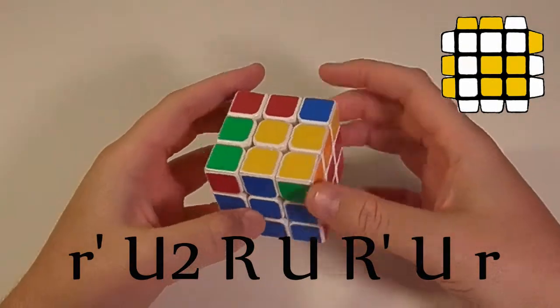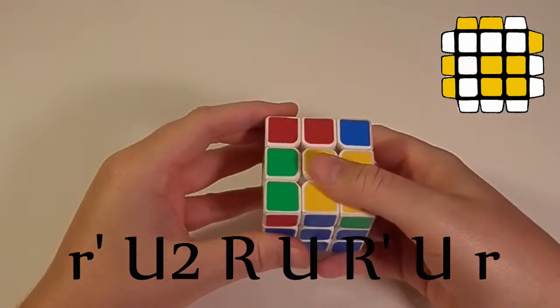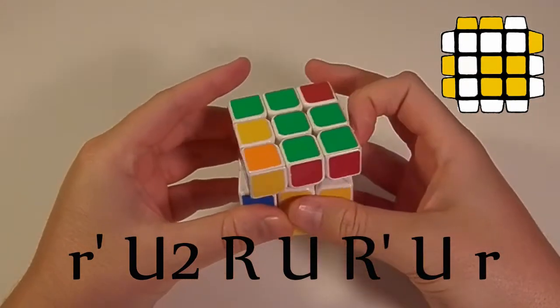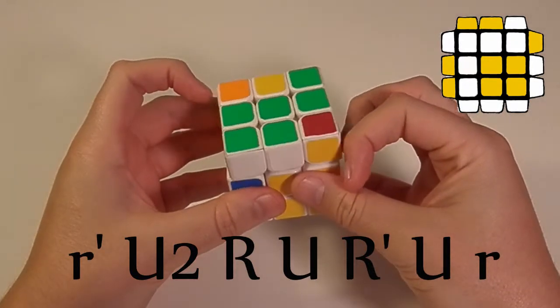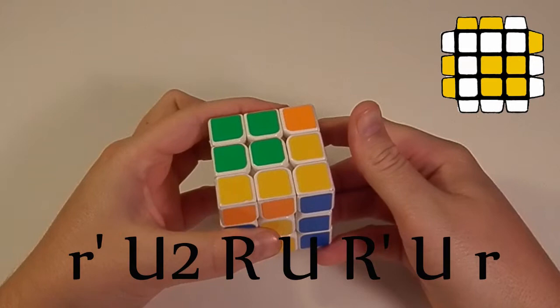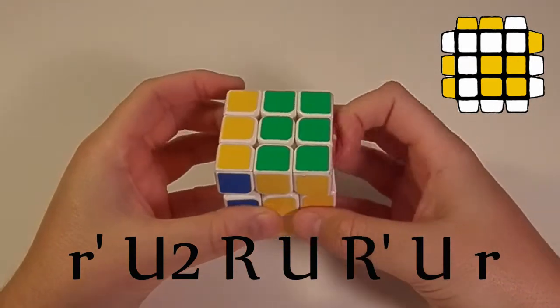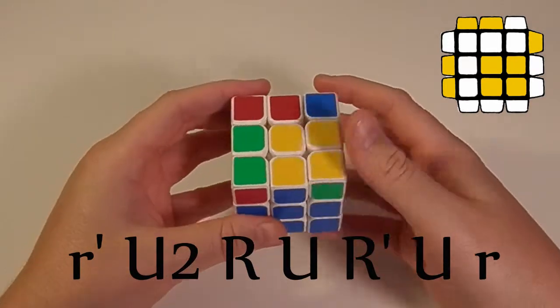Now I'm not very fast at these because I'm learning them along with you guys, but here's how I execute it. I do my small r prime, u2 with the double flick, r, push with my left finger to do the u, r prime, u, small r. And here it is.